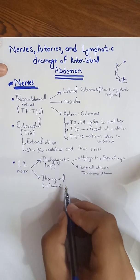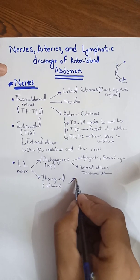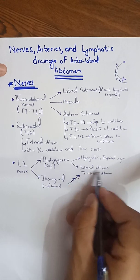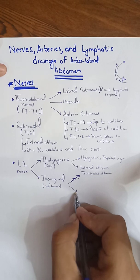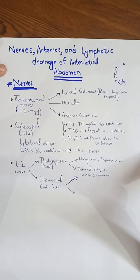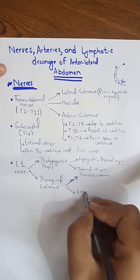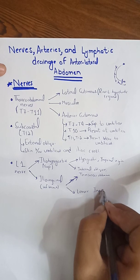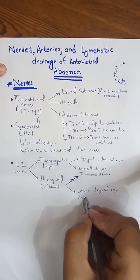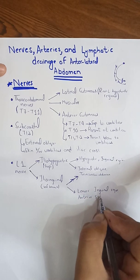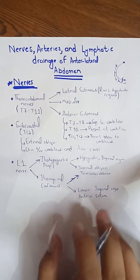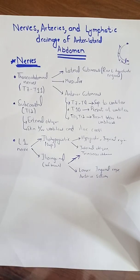The ilioinguinal nerve has the same muscular innervations as the iliohypogastric — the internal oblique and transversus abdominis — and its cutaneous innervations are to the skin over the lower inguinal region and the anterior scrotum. This completes the nerves of the anterior lateral abdominal wall. We will now move toward the blood supply.